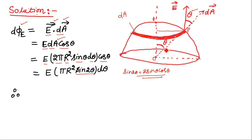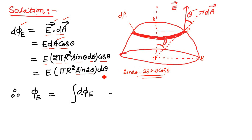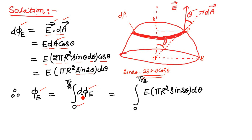When point P is at A, the angle θ becomes 0°. When point P moves to point B at the edge of the hemisphere, the angle between OA and OP becomes 90°. Therefore, the total flux through the hemisphere is the integral of dΦ with limits from 0 to π/2. Inserting the value of dΦ found earlier, the expression simplifies with E, π, and R² taken outside as constants.